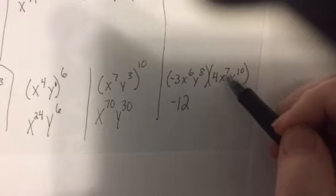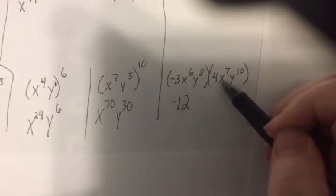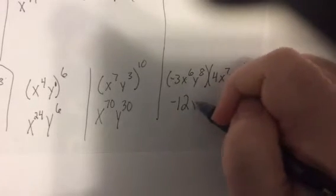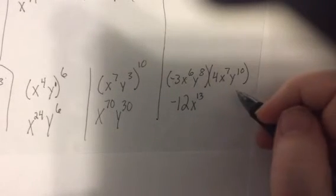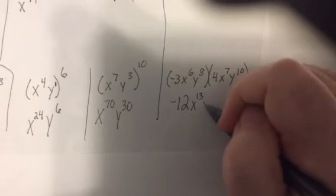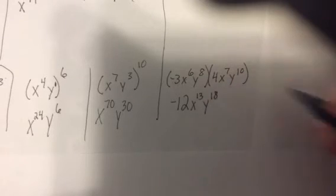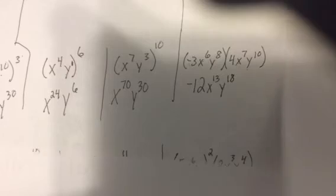X to the sixth times X to the seventh, when you multiply two things in the same base, you add the powers. We did that up above. Y to the eighth times Y to the tenth would be Y to the eighteenth. And one more row to go.